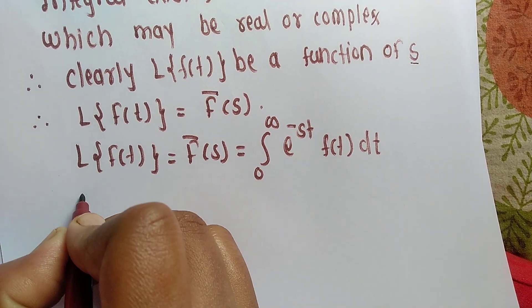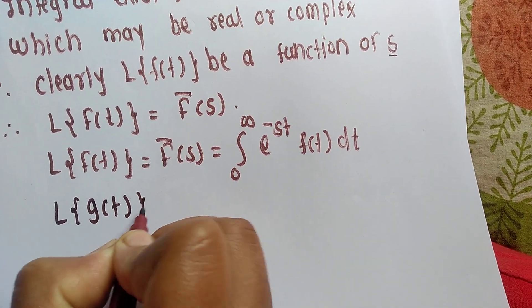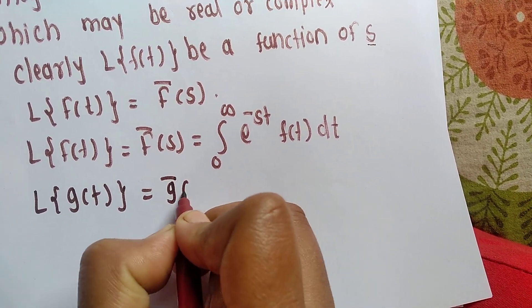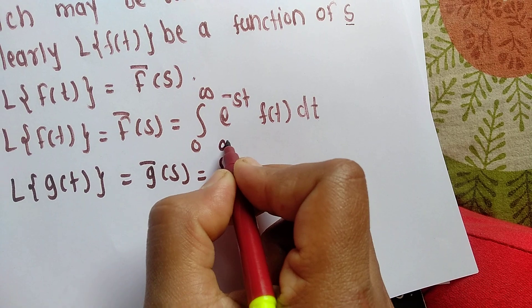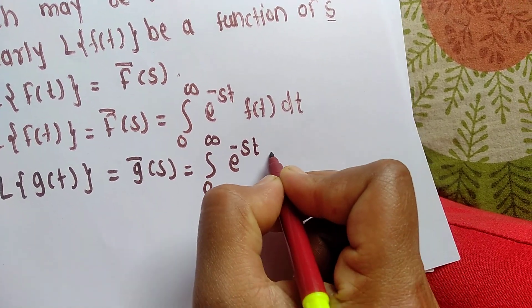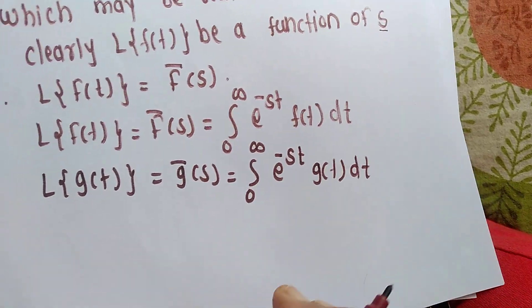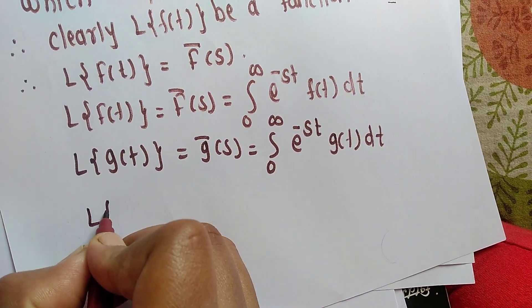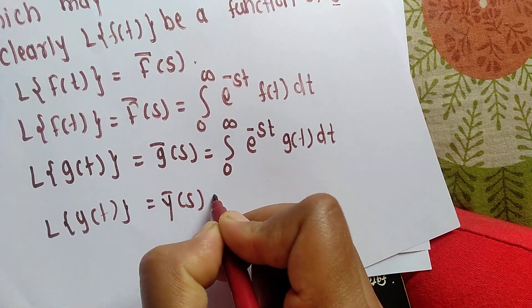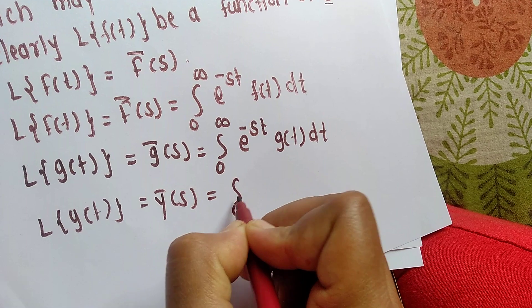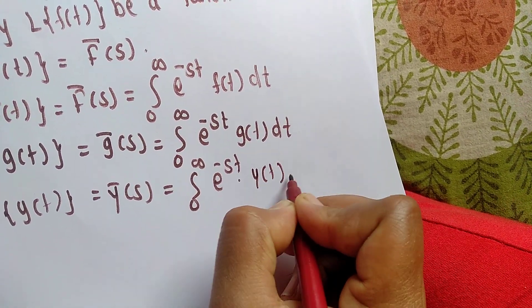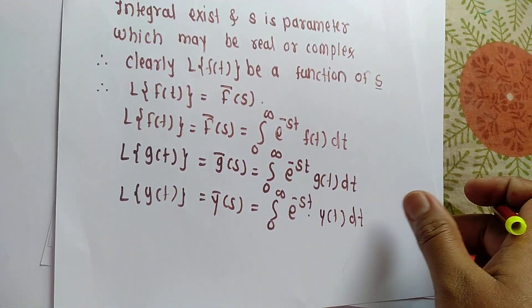Now for defining the Laplace, if I use a function g, then: Laplace of g of t is equal to g-bar of s, which is equal to integration zero to infinity of e raised to minus st into g of t dt. Similarly, if I take a function y, then y of t would give y-bar of s equal to integration zero to infinity of e raised to minus st into y of t dt. That is the Laplace transform definition.